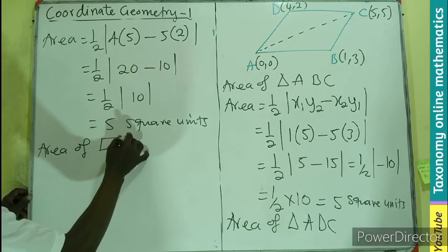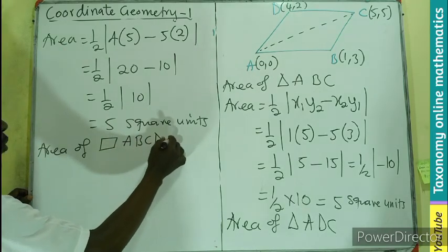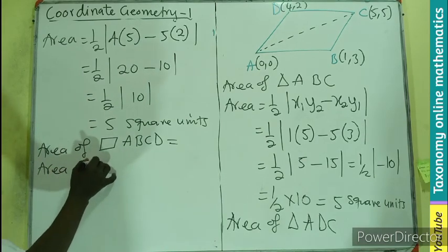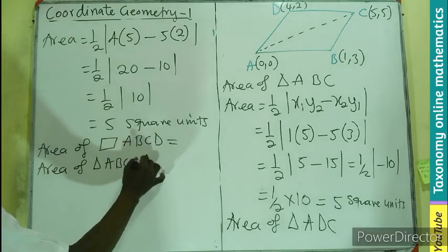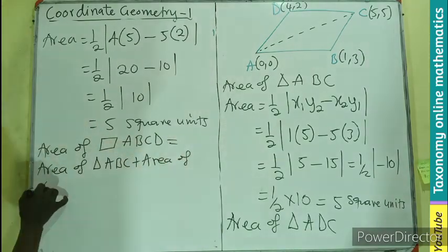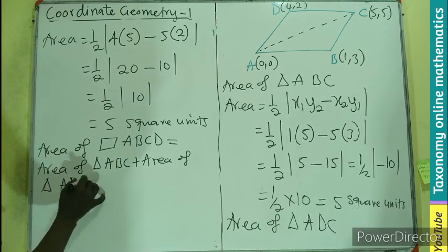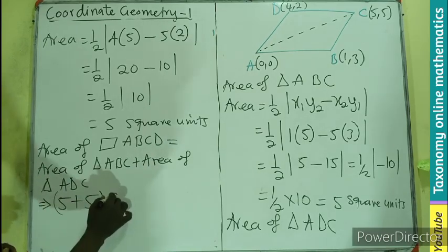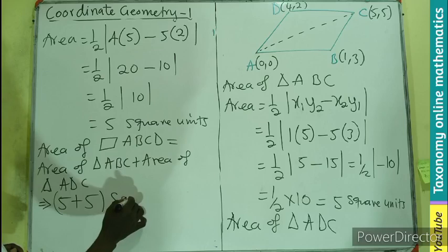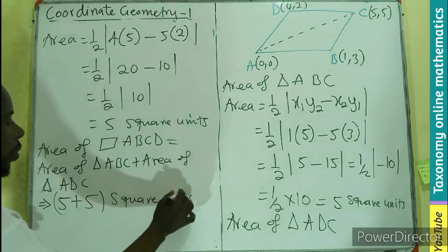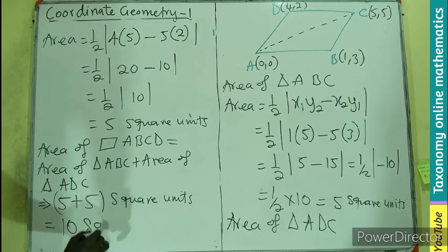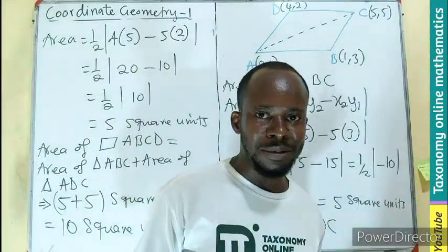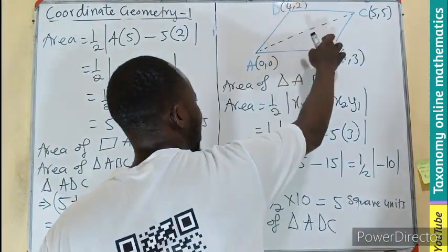We know that the area of parallelogram ABCD will be equal to the area of the first triangle, which is area of triangle ABC, plus area of triangle ADC, which will be equal to 5 plus 5.